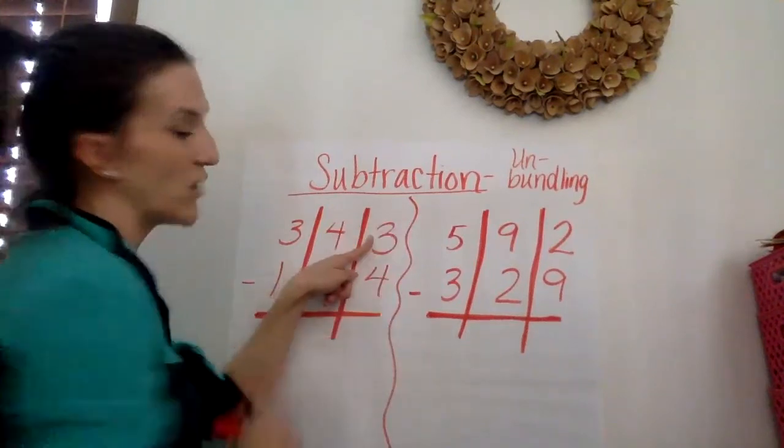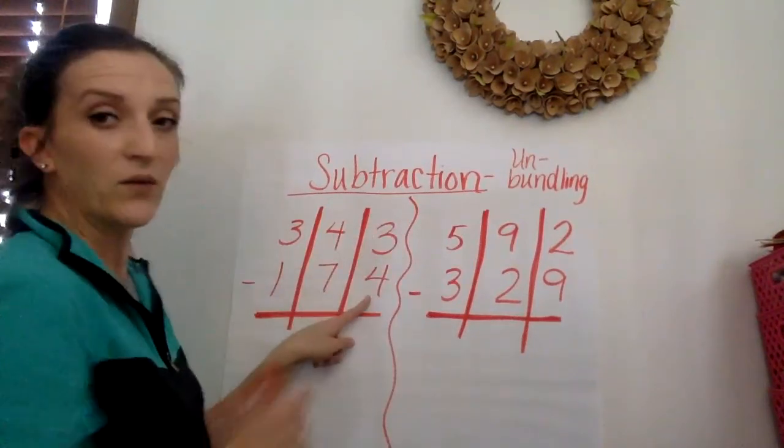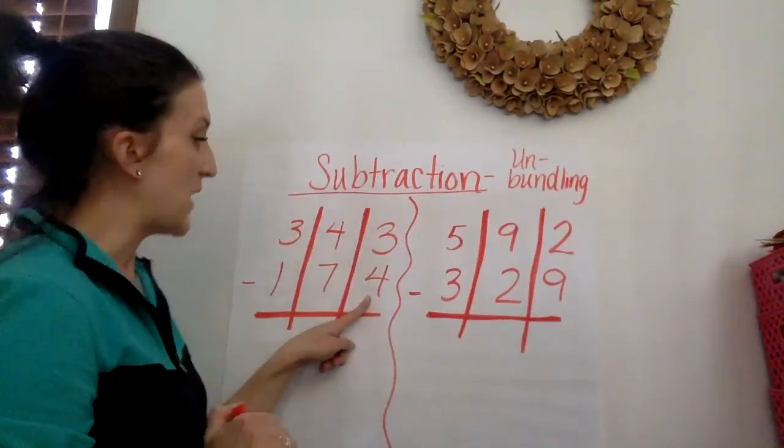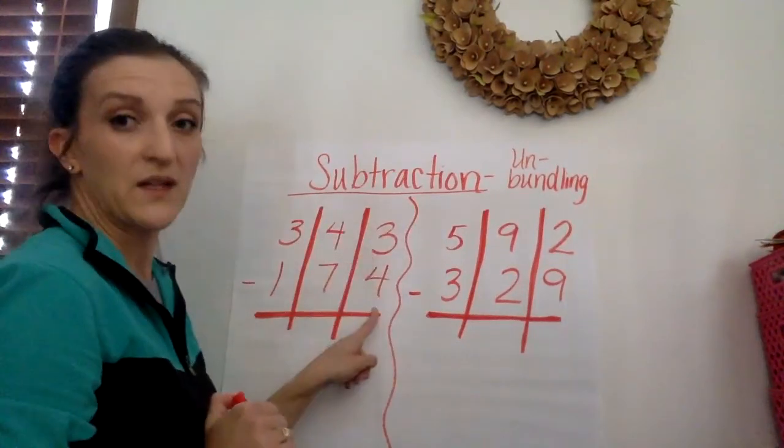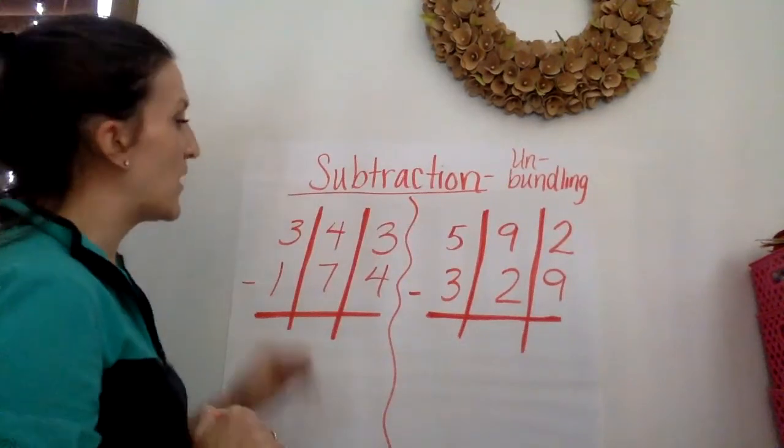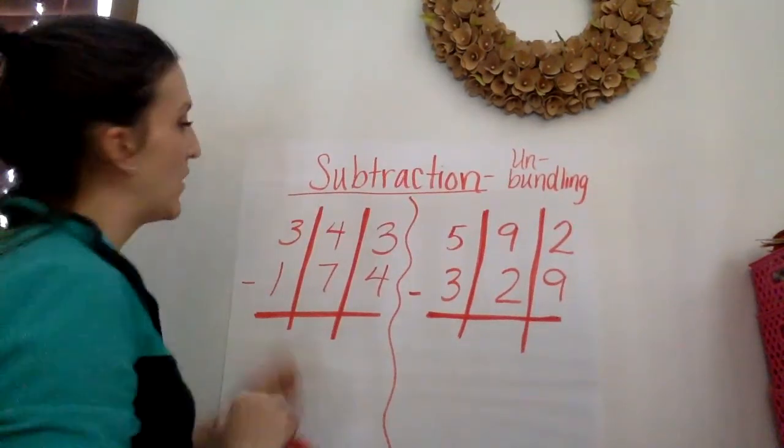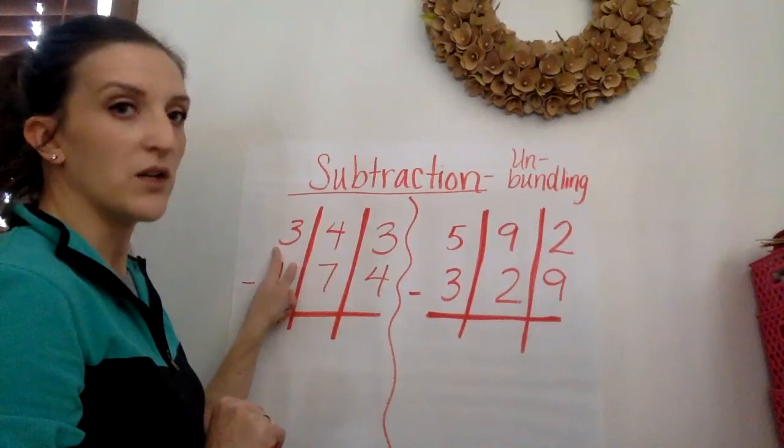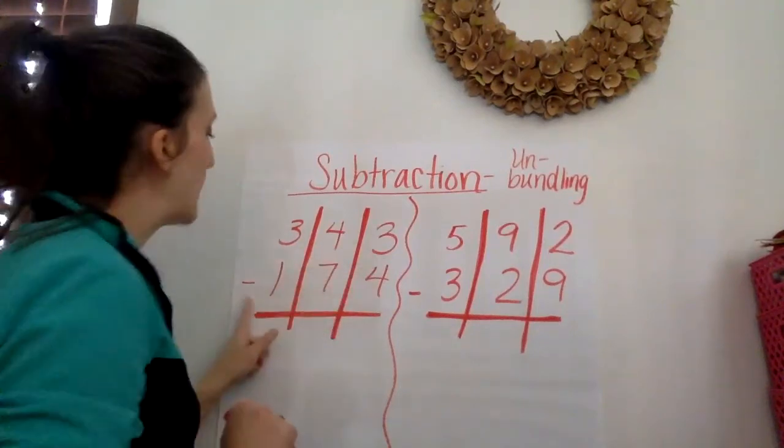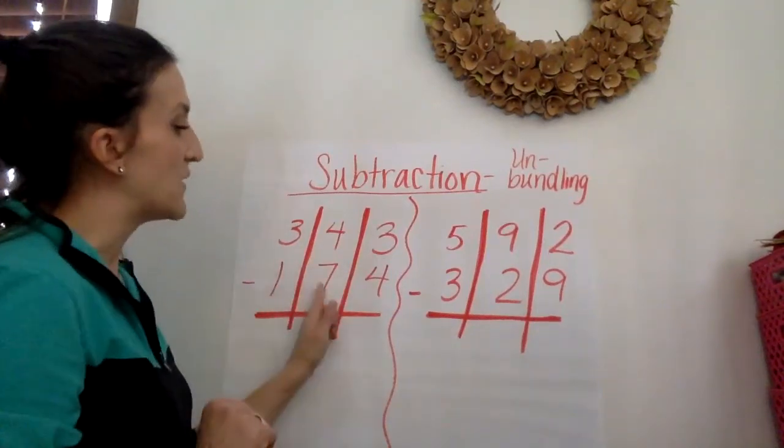You can subtract straight down but if there's more on the floor you need to go next door and get 10 more. If the numbers are the same 0 is the game. So let's see what we're subtracting. We're subtracting 343 minus 174.